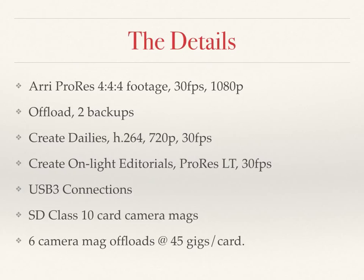Here are the details. We're going to assume we're shooting an ARRI camera, doing it in ProRes 444, 30 frames a second, and in a 1080p raster. 30 frames a second is great for documentaries and news gathering. In most cases, if you're doing narrative film or drama, that would be 24 or 23.976, but we're going to use 30 frames.